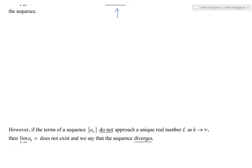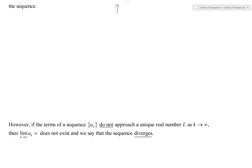On the contrary, if the terms in the sequence a_k do not approach a real number L as the index k goes to infinity, then the limit as k goes to infinity of a_k does not even exist, because it doesn't approach a real number L.